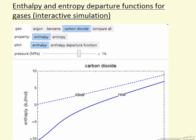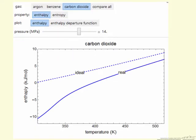The example here is plotting carbon dioxide. I can select one of three gases, or I could compare them all at one pressure. If I select enthalpy, then my choices are to display enthalpy or the enthalpy departure functions.